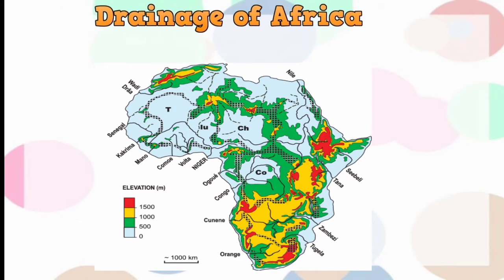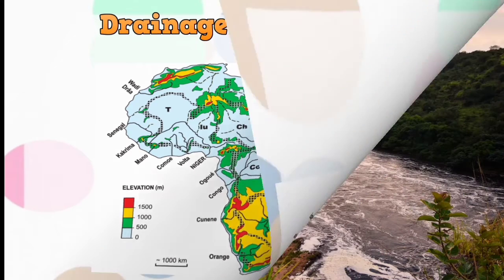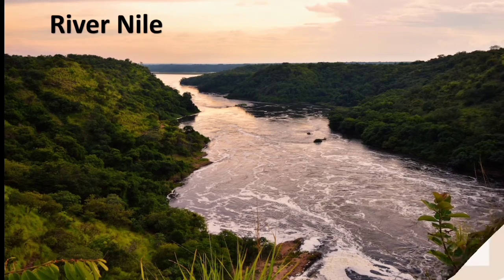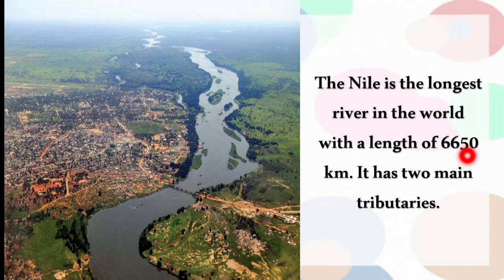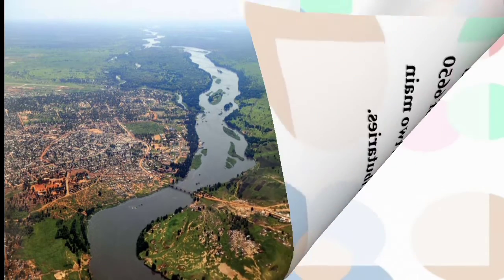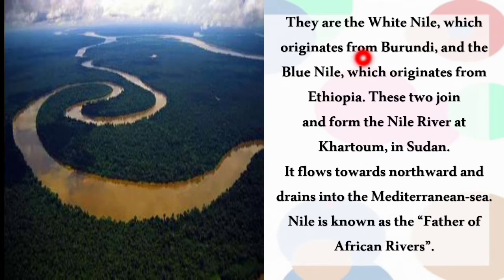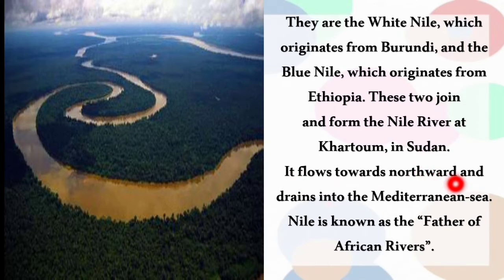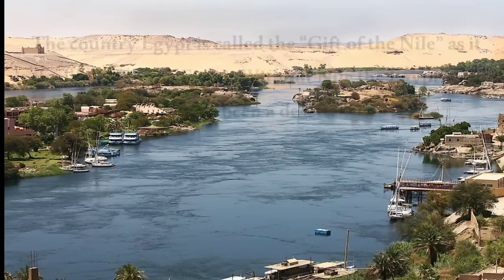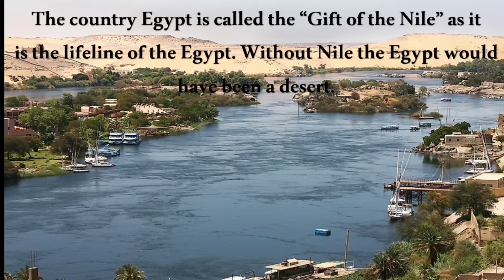River Nile is one of the longest rivers in the world with a length of 6,650 km, with two main tributaries: the White Nile, which originates from Burundi, and the Blue Nile, which originates from Ethiopia. These two join to form the Nile River at Khartoum in Sudan. It flows northward and drains into the Mediterranean Sea. Nile is also called the 'father of African rivers'.